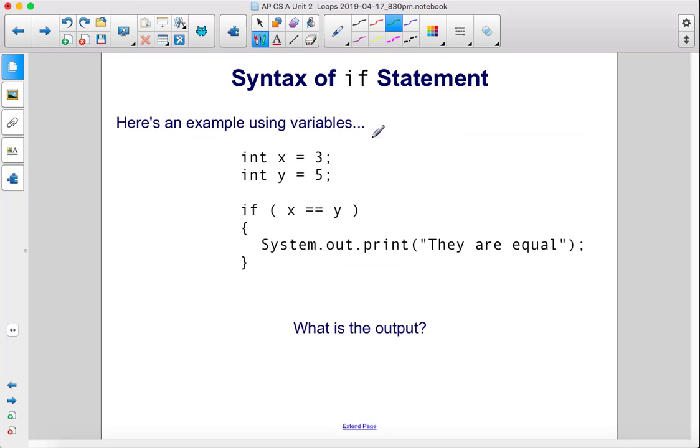Here's an example using variables, int x equals 3, int y equals 5. If x equals y, which it doesn't, therefore this is false, and the computer is just going to jump past the code in the curly brace without looking at it at all. So there is no output here.